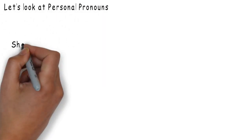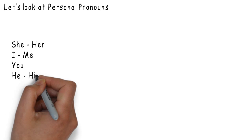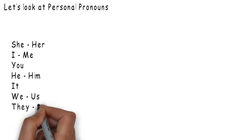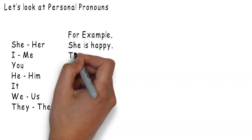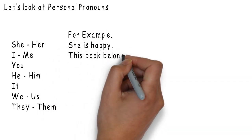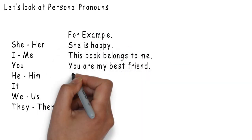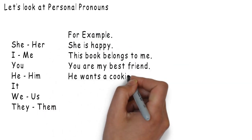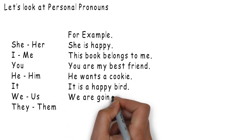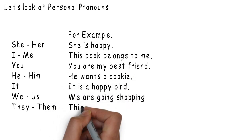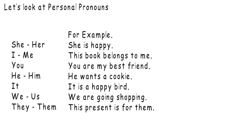Let's look at personal pronouns: she, her, I, me, you, he, him, it, we, us, they, them. For example: she is happy. This book belongs to me. You are my best friend. He wants a cookie. It is a happy bird. We are going shopping. This present is for them.